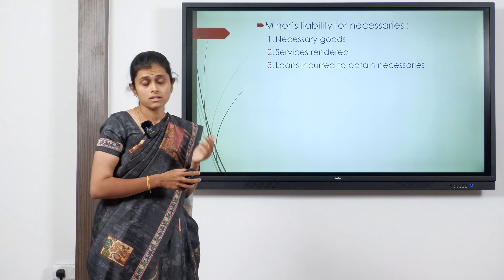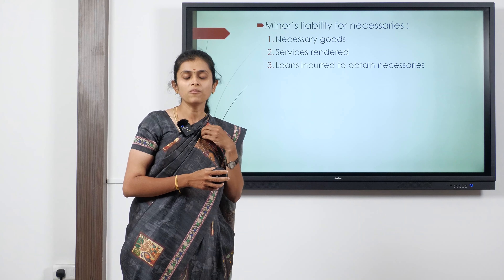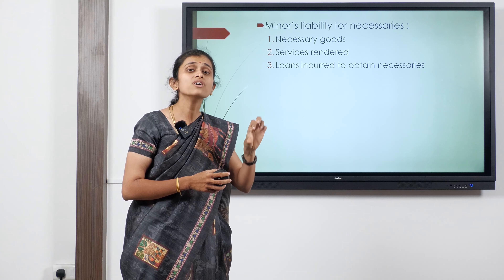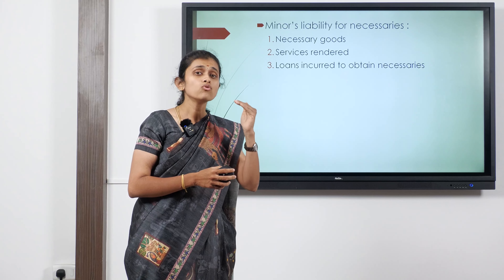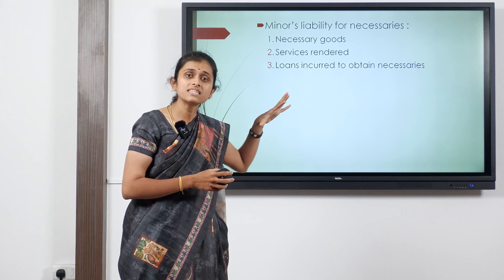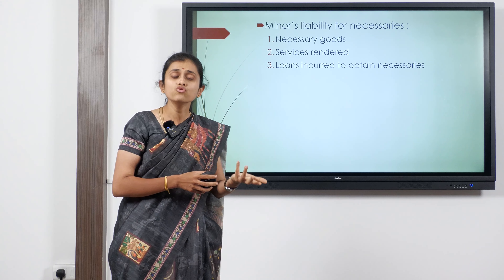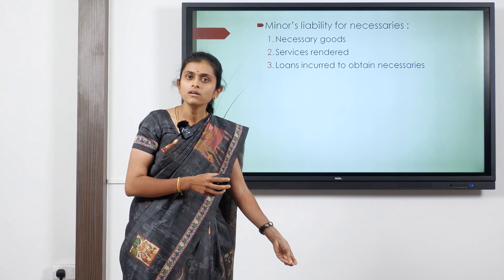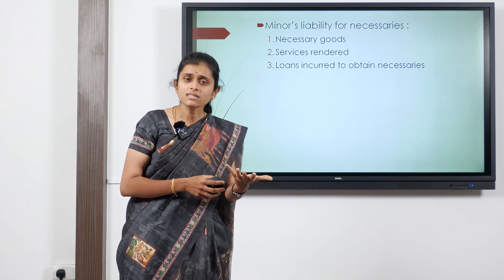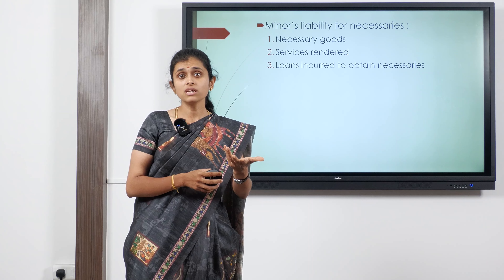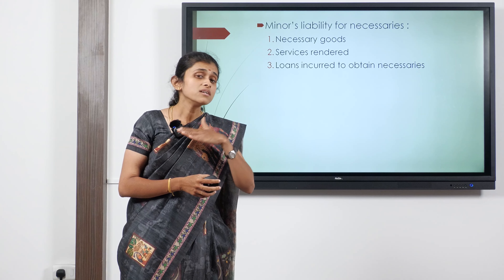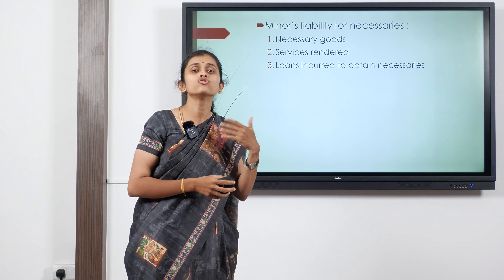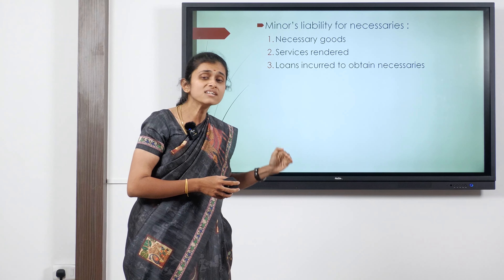Minor's liability for necessaries: Necessaries are basic needs. If somebody provides for the basic needs of a minor, the minor is responsible for reimbursement through his properties — not personally, but through the properties he holds. Necessaries include necessary goods such as basic food, clothing, shelter, and can also include a small bicycle or educational books. Branded clothing or a branded watch would be considered luxury — only basic needs qualify.